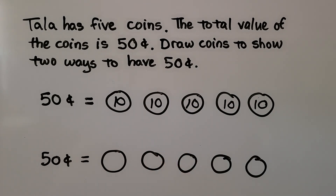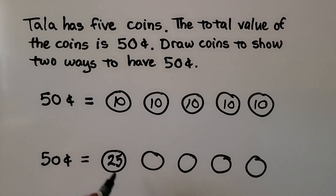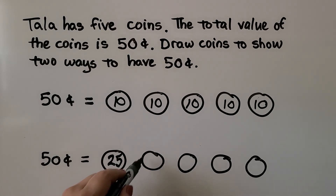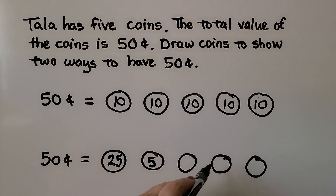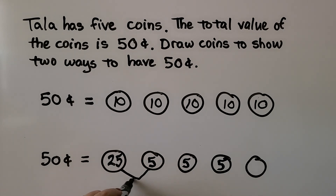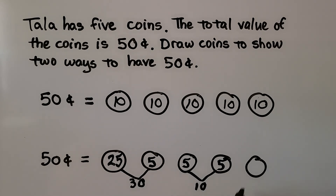How else could we make 50 cents with five coins? We could have one quarter at 25 cents, then draw dimes and nickels. A quarter and a nickel is 30 cents; adding two more nickels is another 10 cents — that's 40. Then add a dime — that would be 50 cents, using five coins total.